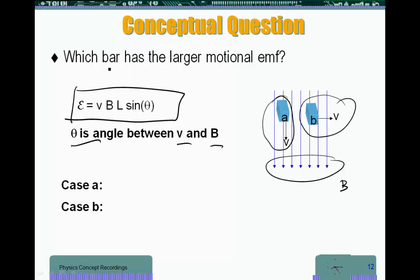The question is, which bar is going to have the larger EMF, the larger E? In case A, V and B are in the same direction, giving us an angle of 0, so the EMF is going to be 0.